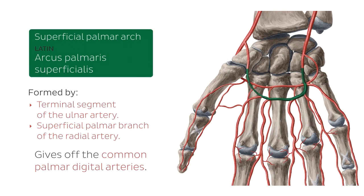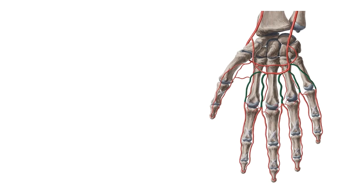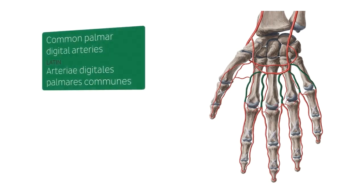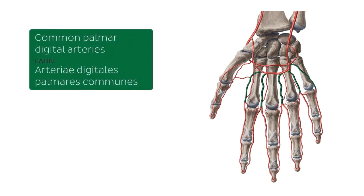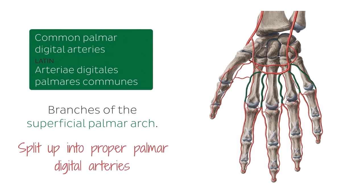If we go a bit more distally, we're going to be finding these structures that you see now highlighted in green. These are the common palmar digital arteries, which I just mentioned on the previous slide. The common palmar digital arteries are branches of the superficial palmar arch, which you can also see clearly in this image. They run down until the root of the finger where they split into the proper palmar digital arteries.